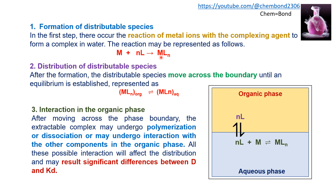In the first step, the ligand moves to the aqueous phase and combines with the metal ion to produce a complex. In the second step — distribution of distributable species — after formation, the distributable species moves across the boundary (also known as the interface) between the two phases until equilibrium is established. The complex in the organic phase is in equilibrium with the complex in the aqueous phase.